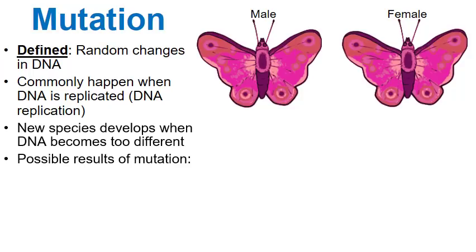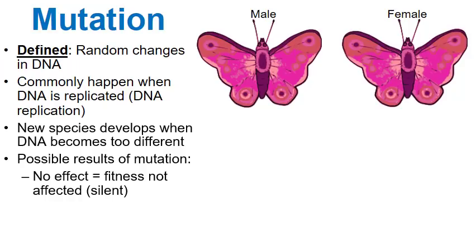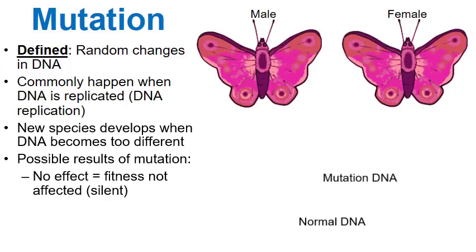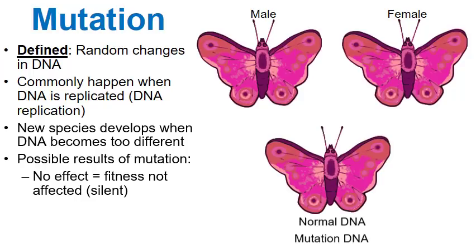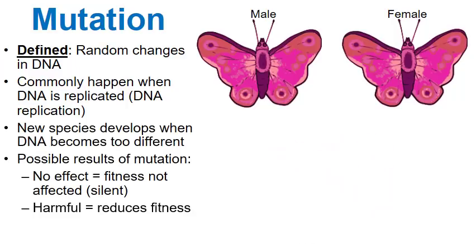Sometimes a mutation has no effect — the fitness of the offspring is not affected. These are called silent mutations. For instance, the father butterfly passes on normal DNA, the female passes on a mutation, but the offspring has nothing noticeably wrong with it. Even though this offspring inherited a mutation, its fitness is unaffected — this is what we call a silent mutation.